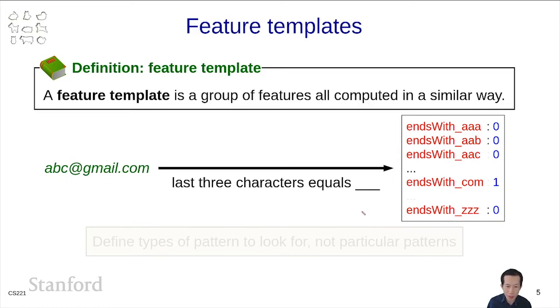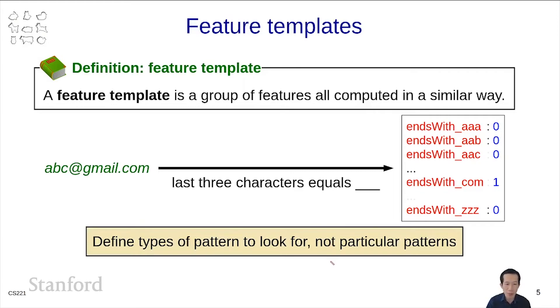The important part here is that we no longer have to say which suffixes are important. We don't have to say what particular patterns to look at. We just have to know that there exists some suffix that might be important and define this feature template, letting the learning algorithm sort out which of these many features are actually relevant.